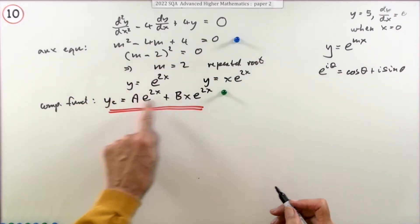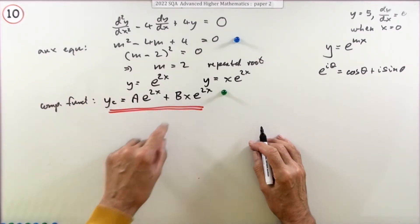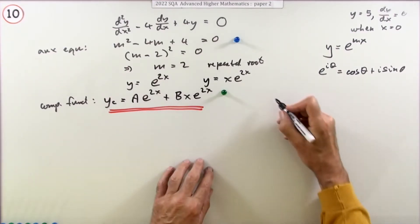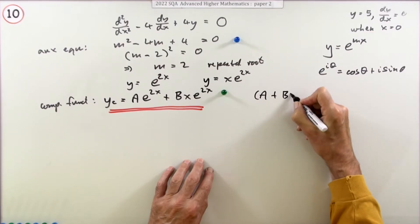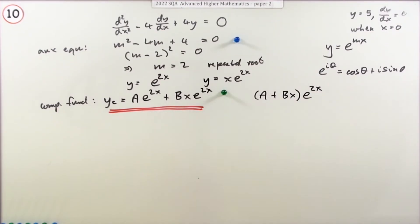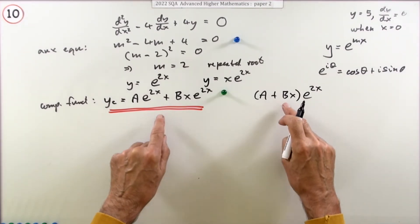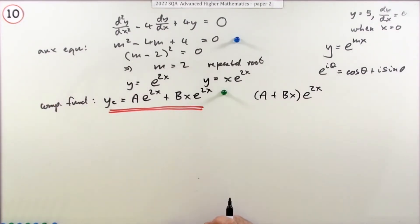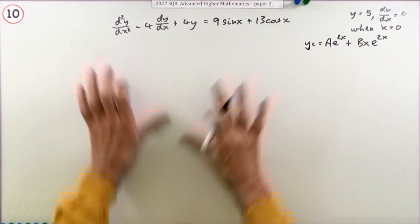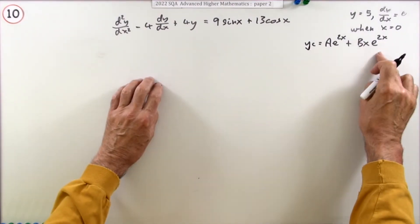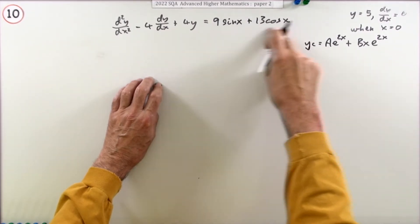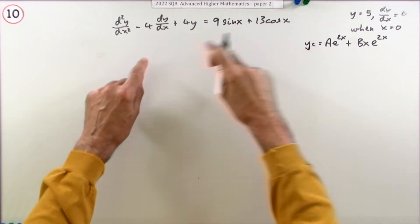You could tidy that up by factoring out the common factor e^(2x) to write it as (A + Bx)e^(2x), and you might use that neater form in the final answer. Now clearing space and reinstating the non-homogeneous part — the right-hand side not involving y — we need to find what's called the particular integral.